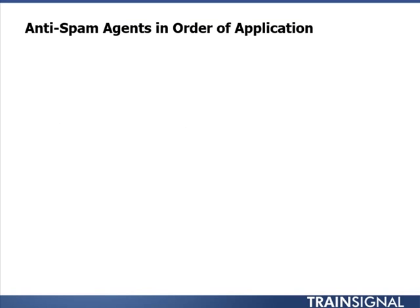We're going to talk about the Anti-Spam agents in order of application — the order in which they apply. First is Sender Filtering. You use Sender Filtering to specify a list of email senders that you want to block completely. You can block individuals, domains, or whole domain hierarchies. You can also specify how the server will respond when a blocked sender transmits a message, and you can block messages that do not specify who sent the message — meaning no messages with blank senders.